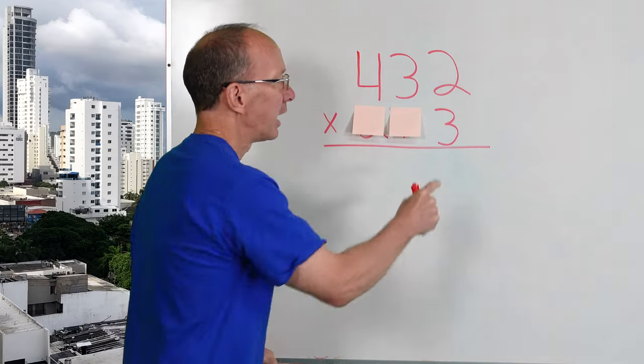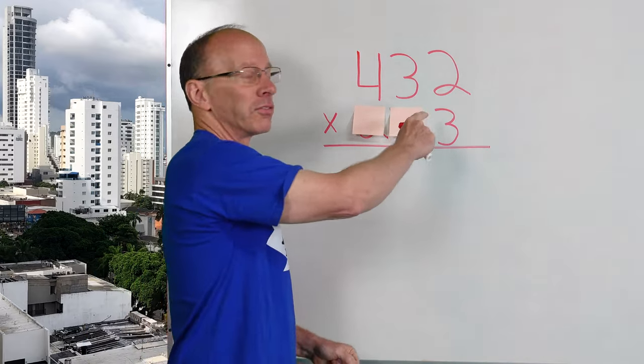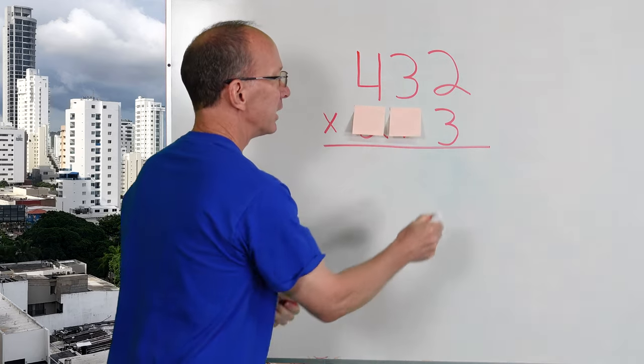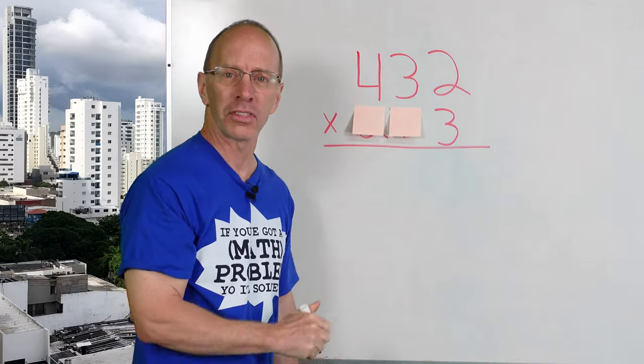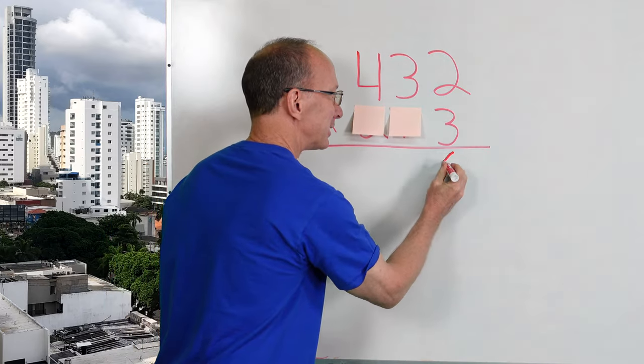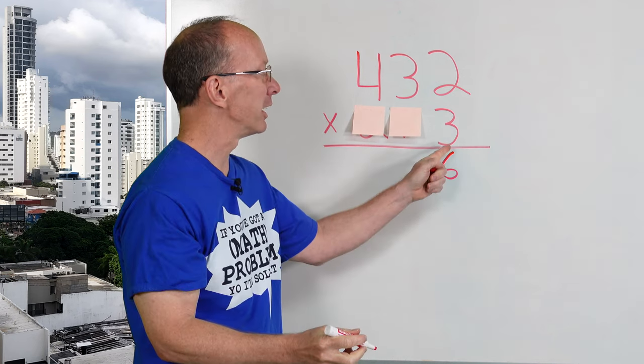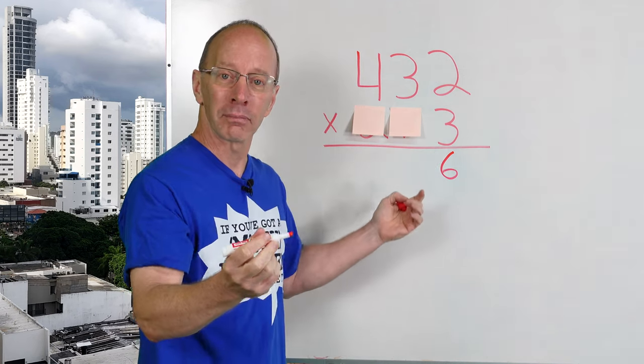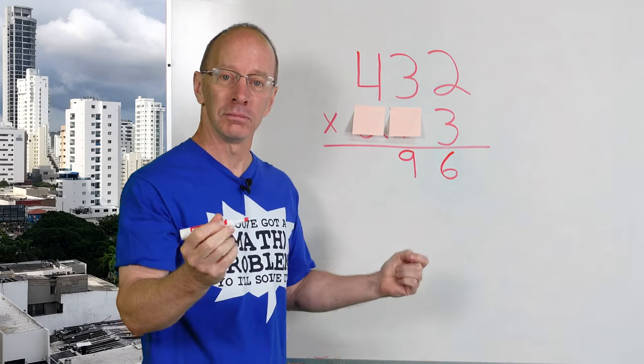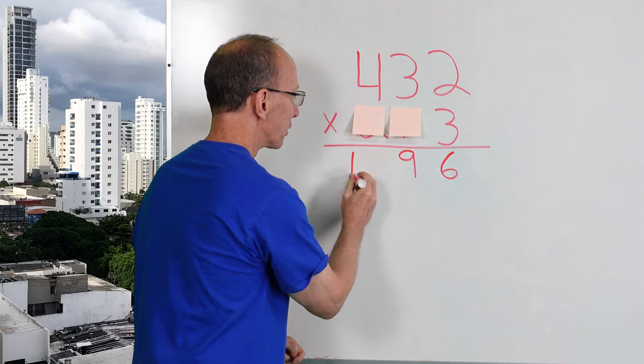Remember when we're multiplying, I'm going to multiply the ones first, then the tens, and then the hundreds. I'm kind of moving this way. So let's go ahead and start three times two. Do you remember what three times two is? Six. You bet. Put the six right here. And now I'm going to go ahead and multiply three times three, nine. Put nine here. And then three times four, 12. You guys are doing great.